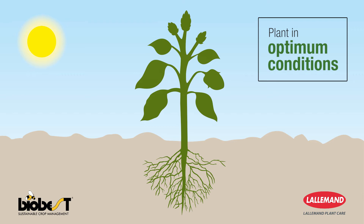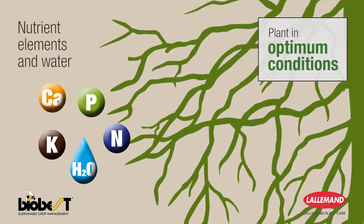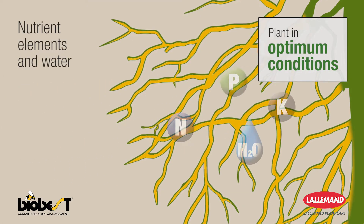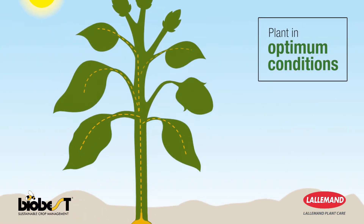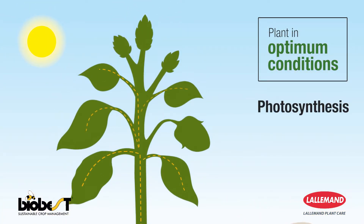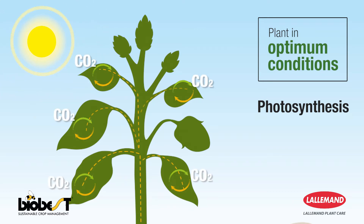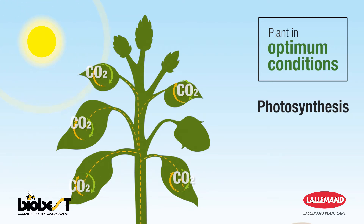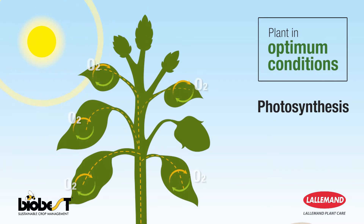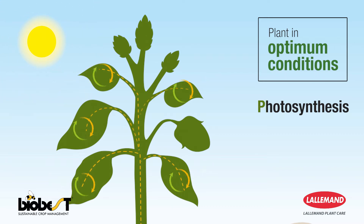In optimum conditions, the plant is supplied with nutrients and water. These elements are transported by the raw sap to the leaves, the site of photosynthesis. The plant then uses light energy, carbon dioxide, and the transported elements to produce elaborate sugars and oxygen. This is photosynthesis.